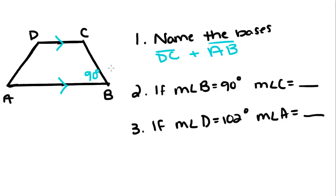And if the measure of angle B equals 90 degrees, what is the measure of angle C? Well we said that there can only be two pairs of supplementary angles. So for this particular triangle, these two and these two are supplementary.